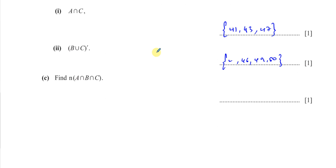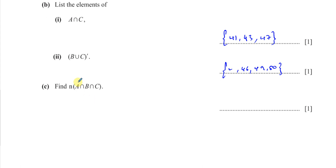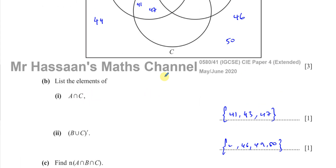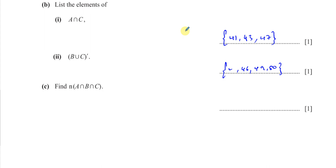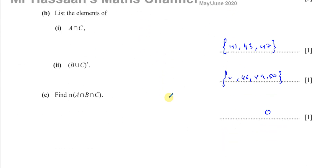The last part asks for the number of elements in A intersection B intersection C — the central region where all three circles overlap. There are no elements there, so the answer is 0. There is nothing fulfilling all three conditions of being odd, a multiple of three, and prime between 41 and 50.